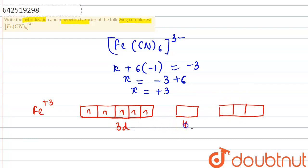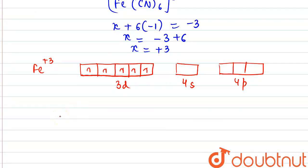So let's write it: 3d, 4s and 4p. This is the configuration of Fe³⁺.